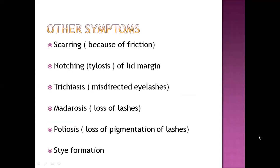Other symptoms include: scarring because of friction — when two surfaces are rubbed against each other abnormally, there can be scarring. Notching of the lid margin, that is tylosis. Trichiasis — there can be misdirected eyelashes anatomically. Madarosis — there can be loss of a few lashes. Poliosis — there can be loss of pigmentation of the lashes, as every eyelash has its own pigmentation related to its growth.